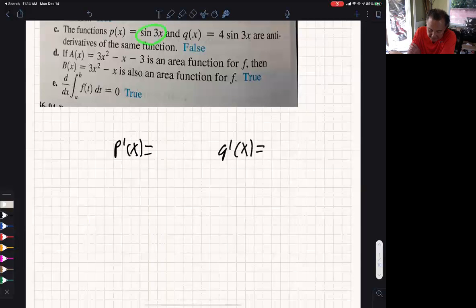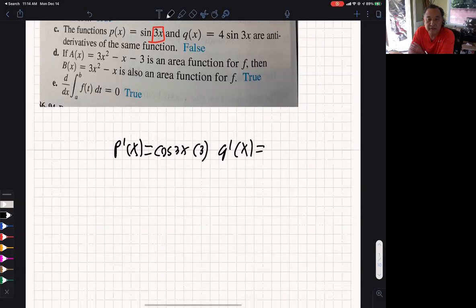So the derivative of this is sine of box. What's the derivative of sine of box? It's cosine of box times derivative of box. But then if you take the derivative of this that's 4 sine of box, derivative of 4 sine of box is 4 cosine of box times derivative of box, this is 12 cosine of 3x.